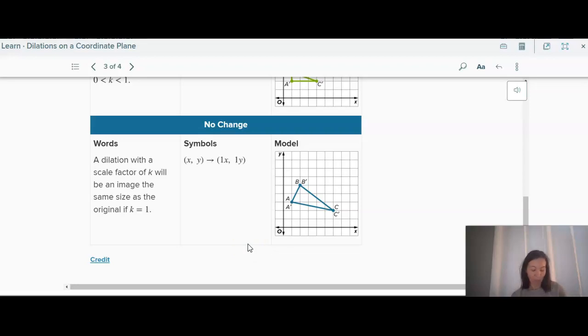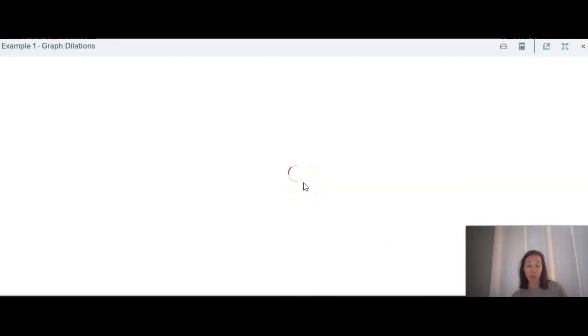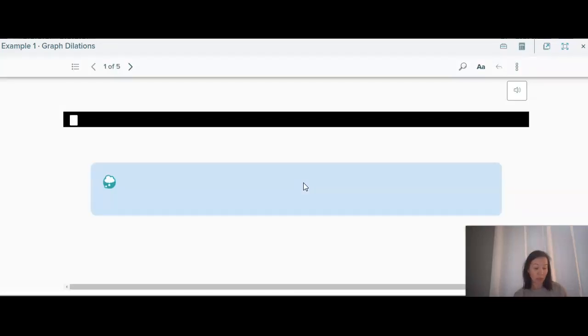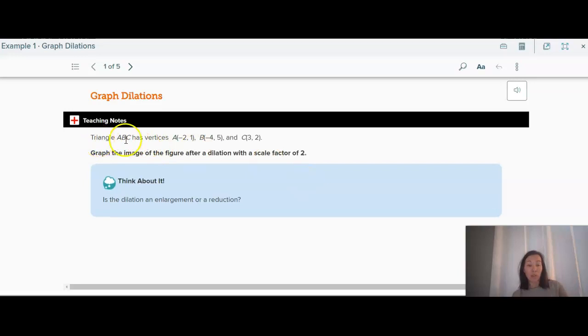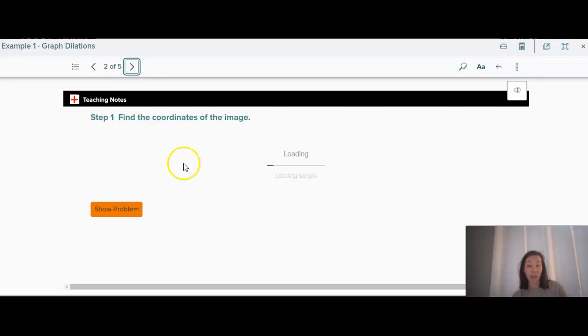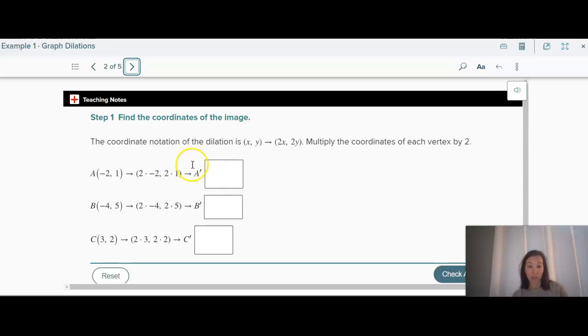But it's really pretty basic. If it's on the coordinate plane and the center of dilation is the origin, then you just multiply each point by that scale factor. The x and the y get multiplied by the scale factor. So if there's a triangle with these vertices and we want to graph the figure, the image after the dilation with a scale factor of 2, really guys, all you have to do is multiply each of the coordinates, both the x and the y, by 2.